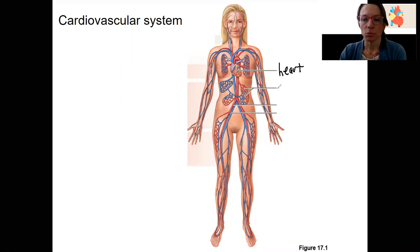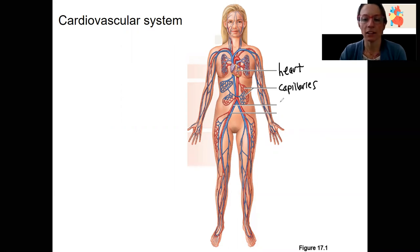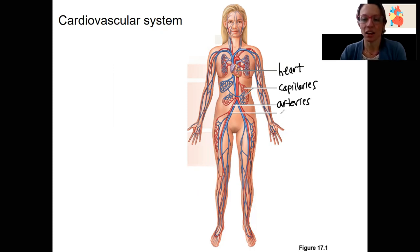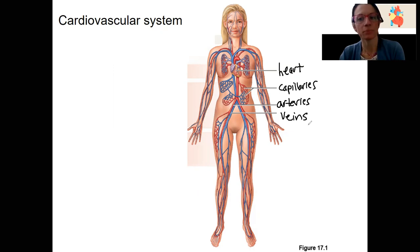The blood vessels, which are all three of these here. Might as well break them down actually now. Here's our capillaries. Here in red is our arteries, often depicted in red, meaning oxygenated. Blue would depict deoxygenated, which are typically veins. We will see an exception to that as we get into this.